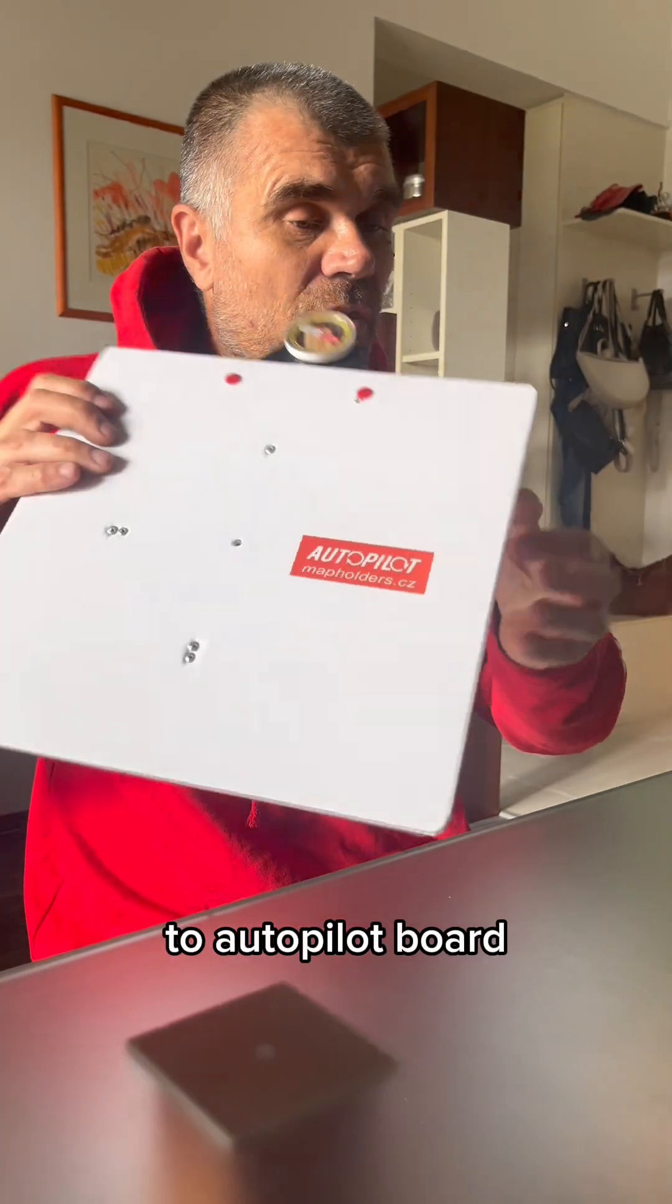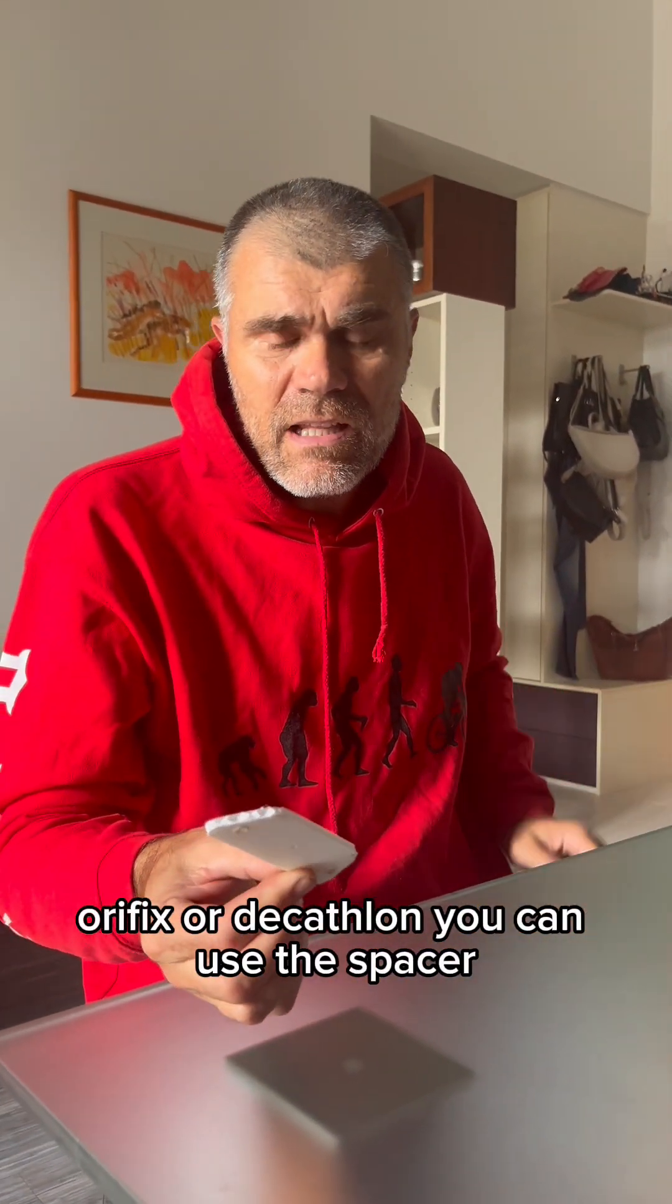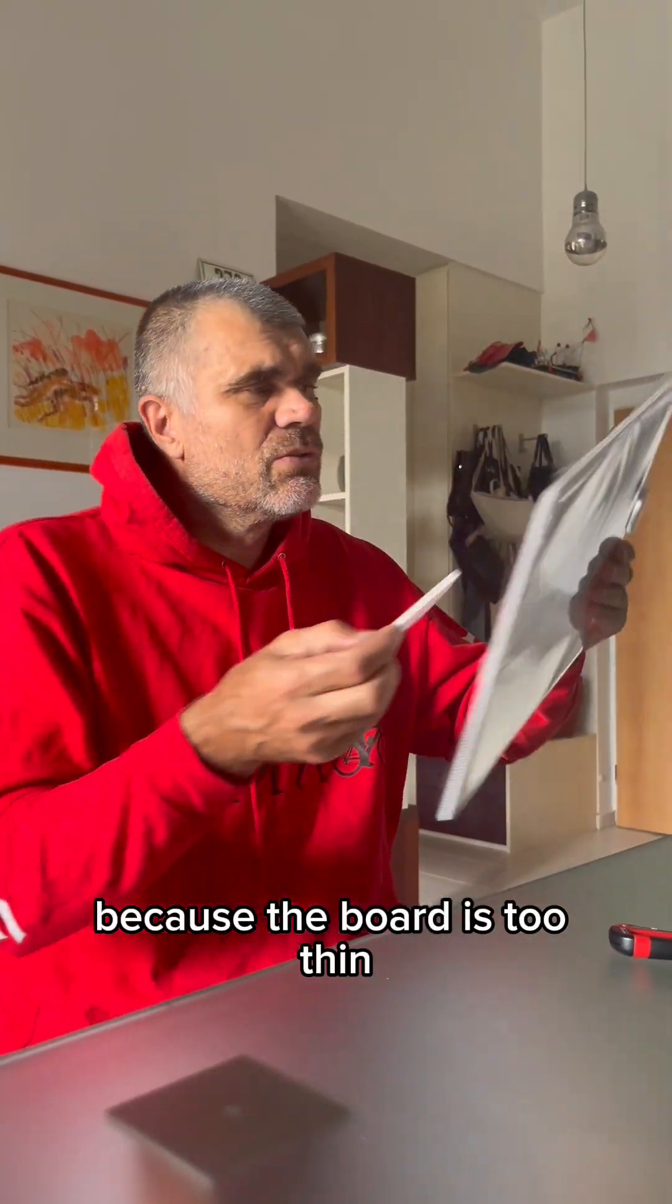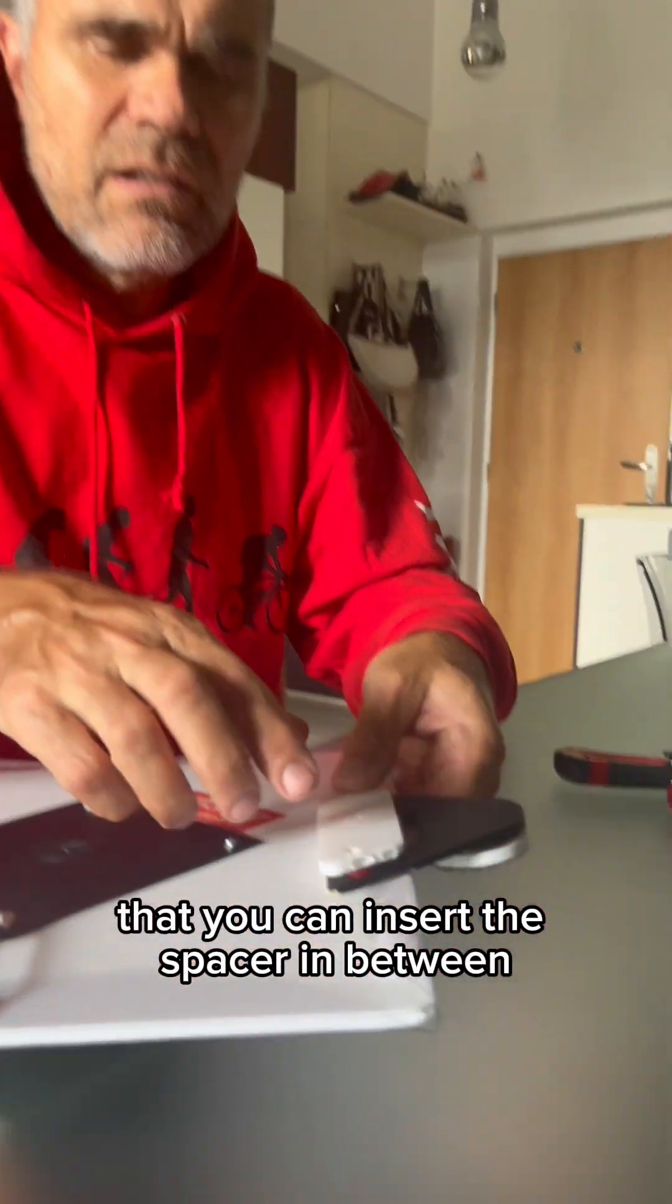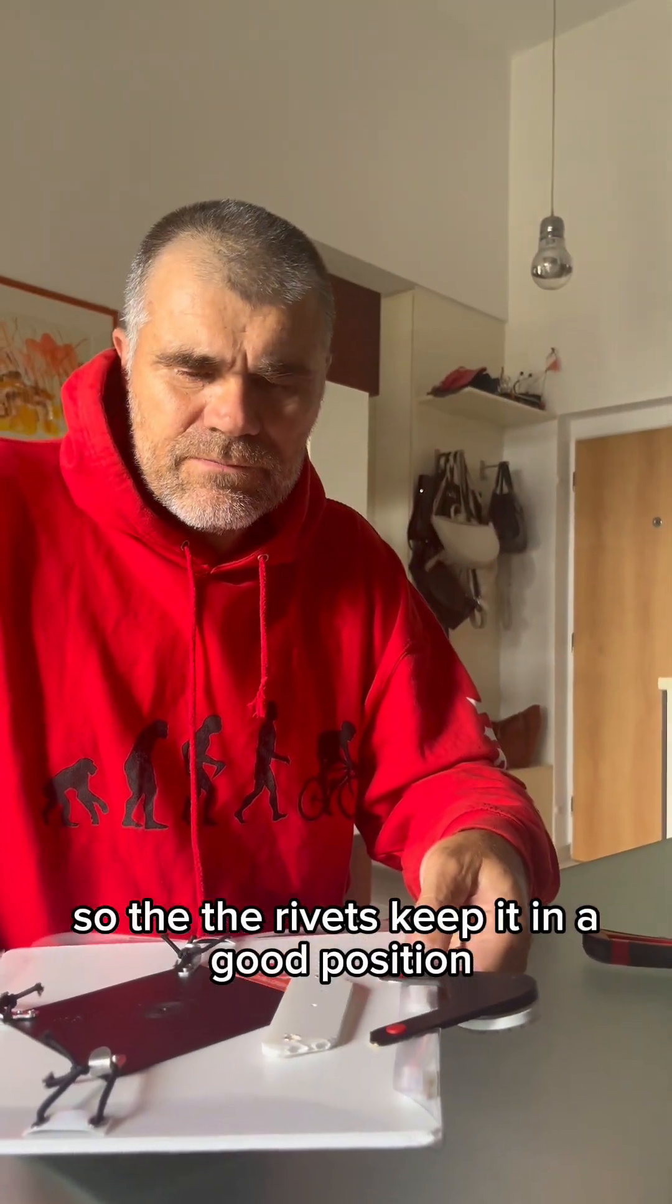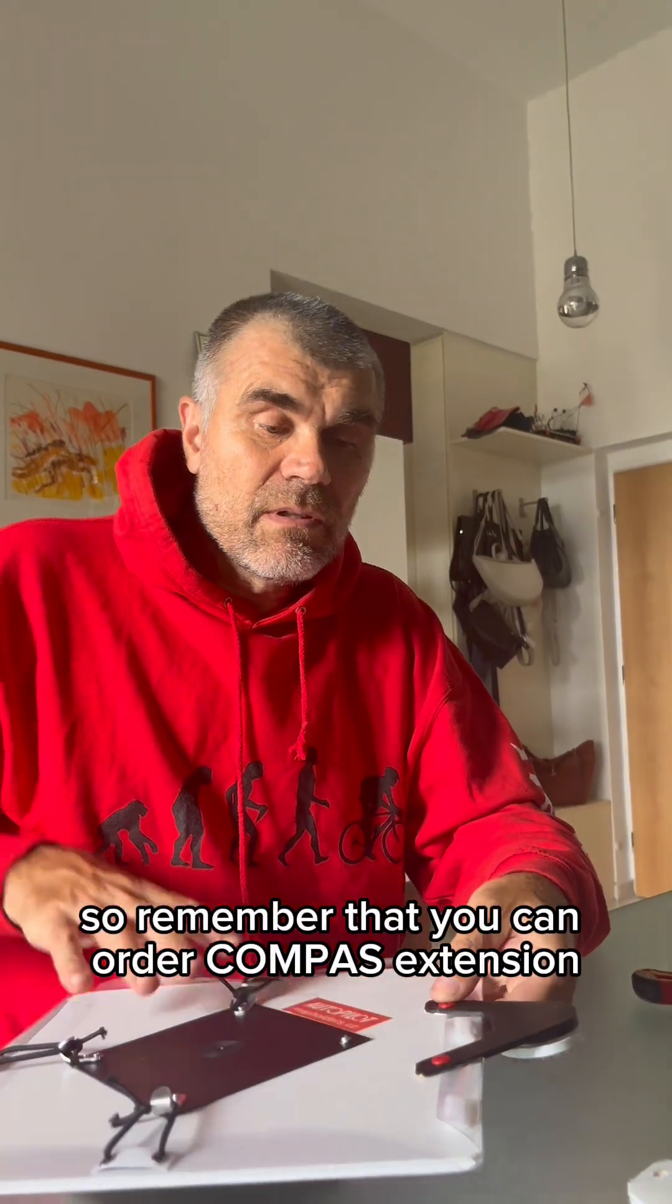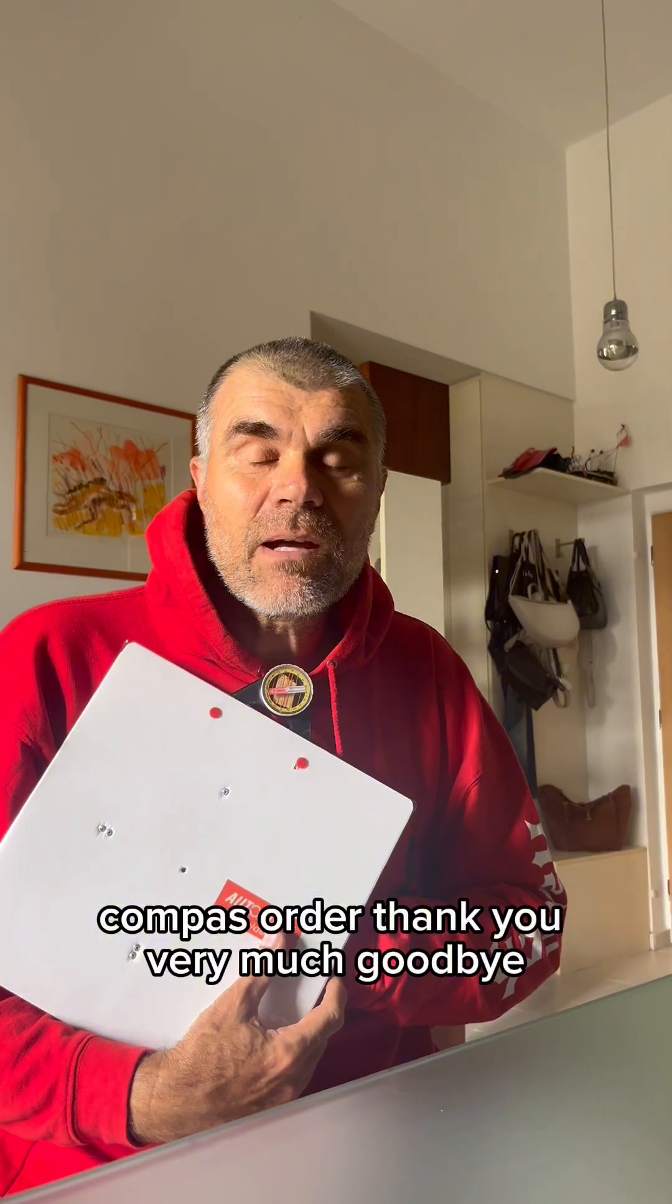This is the connection of a compass holder to the autopilot board. If you have bought another board, for example Orifix or Decathlon, you can use this spacer because the board is too thin. You insert this spacer in between so the rivets keep it in good position. That's all for today. Remember that you can order the compass extension compass holder. Thank you very much, goodbye.